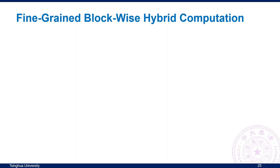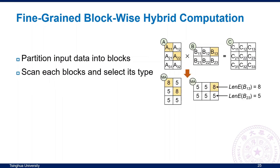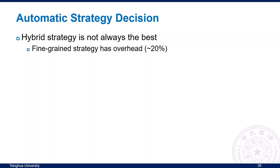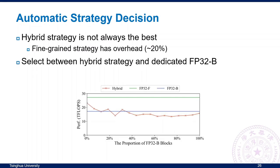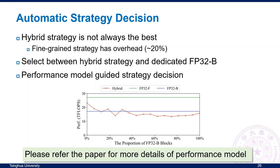We propose fine-grained block-wise hybrid computation. Taking GEMM as an example, we first partition matrices A and B into blocks and scan values for each block. Then for each computation block, we select a proper emulation method, and the kernel handles the computation strategy. However, fine-grained kernels are not always efficient enough. In practice, if the proportion of FP32B blocks exceeds 35%, dedicated FP32B has higher performance. To decide the proper strategy, we build a performance model to predict running time for various strategies with different proportions, and choose the strategy with the highest performance.